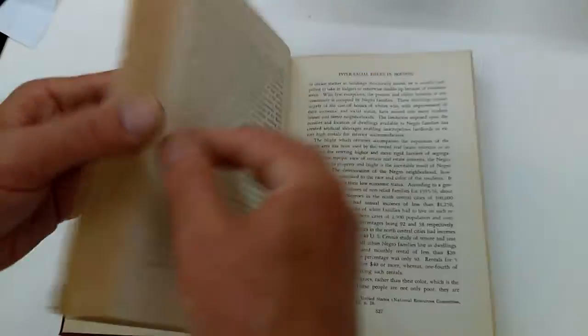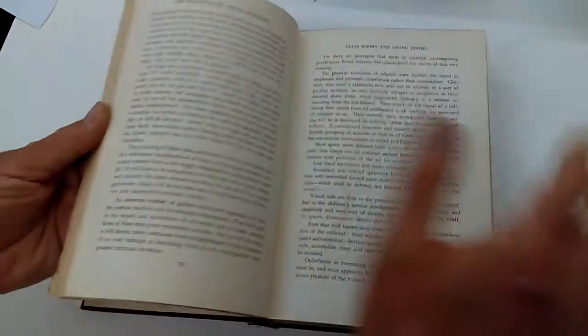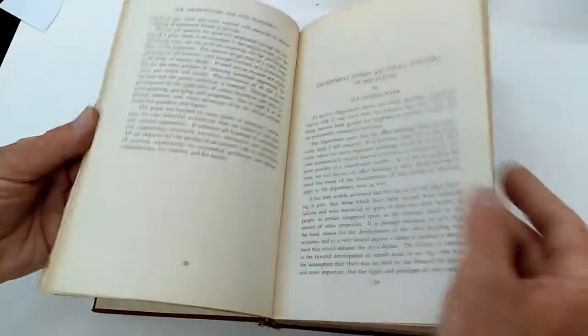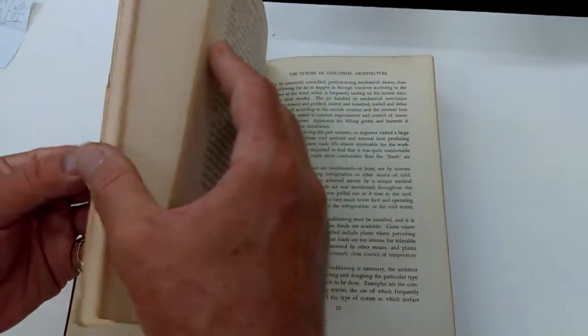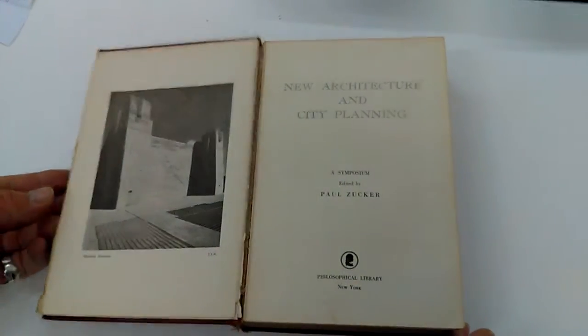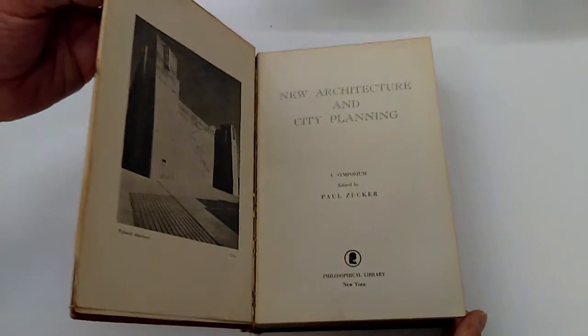Quite a scarce book, currently on the 140 million volume AbeBooks Antiquarian Book Site I can find just three copies for sale, admittedly with dust jackets, but three copies priced at £99, £102 and £142. There we are, New Architecture and City Planning, Paul Zucker. Thanks so much. Bye.